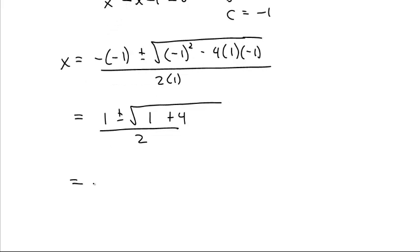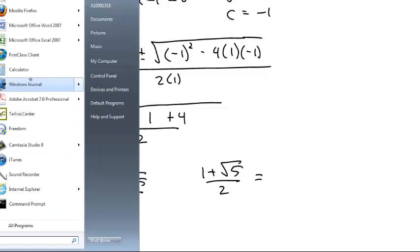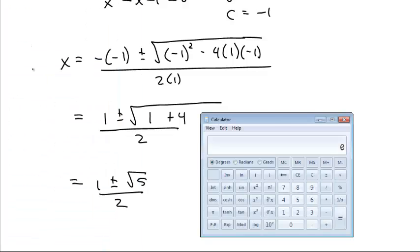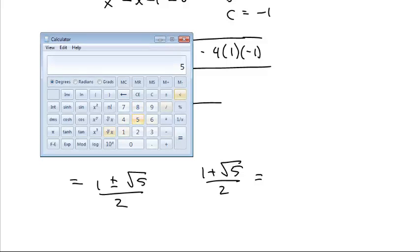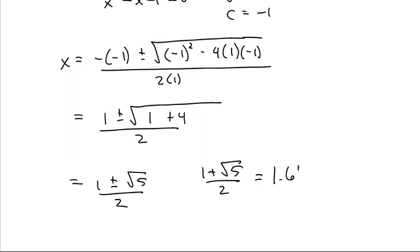Or 1 plus or minus the square root of 5 over 2. Now, 1 plus the square root of 5 over 2 is, let's get out the calculator, the square root of 5 plus 1 divided by 2 is 1.618. Approximately 1.618.